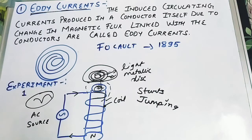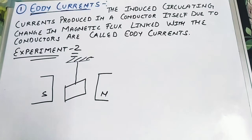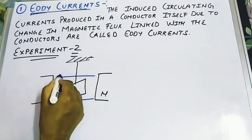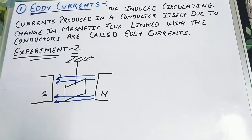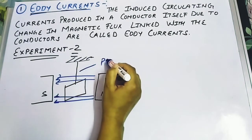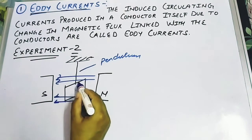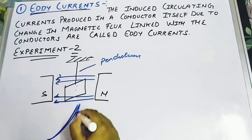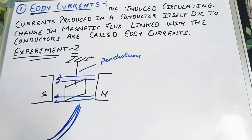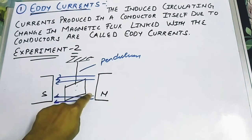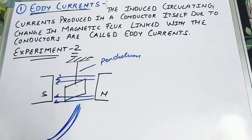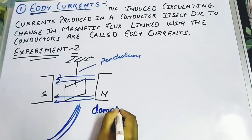Now we move to Experiment 2. Here we took two bar magnets and placed a metallic rectangular frame between them. We took a pendulum of rectangular shape — a metal plate — and placed it in a uniform magnetic field. When this pendulum starts swinging, we observe that in the presence of a magnetic field, it shows a damping effect.